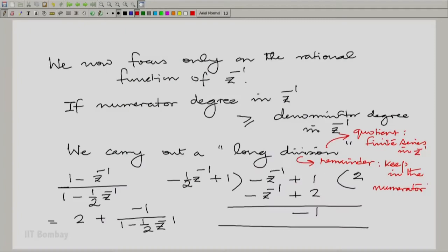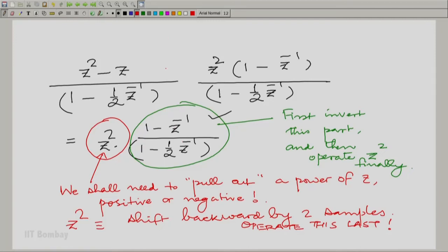Now, unlike the Laplace transform where we had to do some work to understand what happens when you have polynomials in S, here dealing with a finite series in Z inverse is no problem. In fact, if you go back to this particular example, if you get a finite series coming out from here, of course the only finite series here is a constant 2.